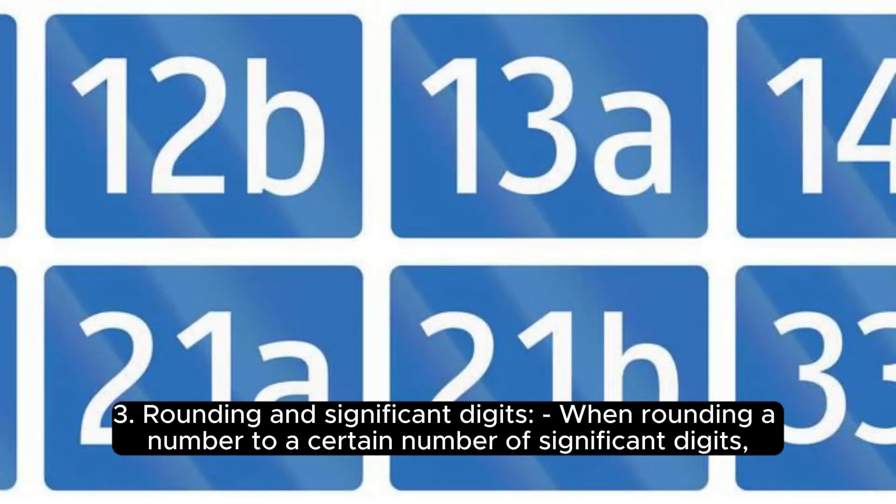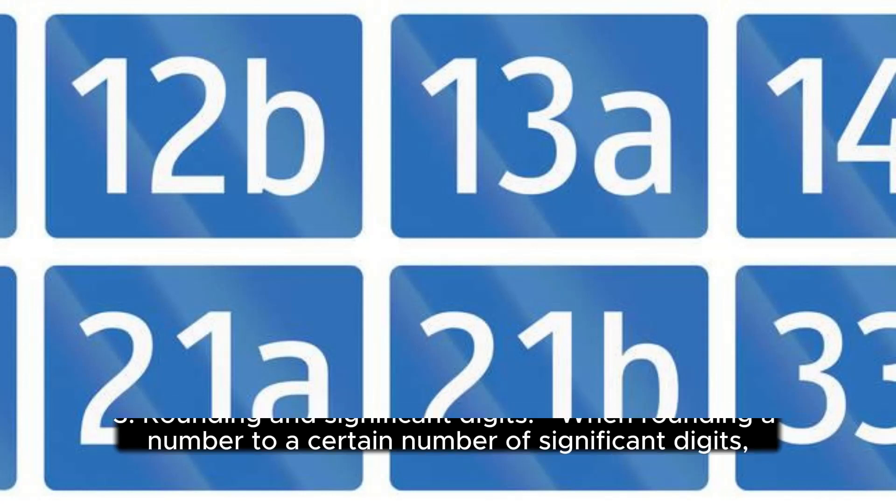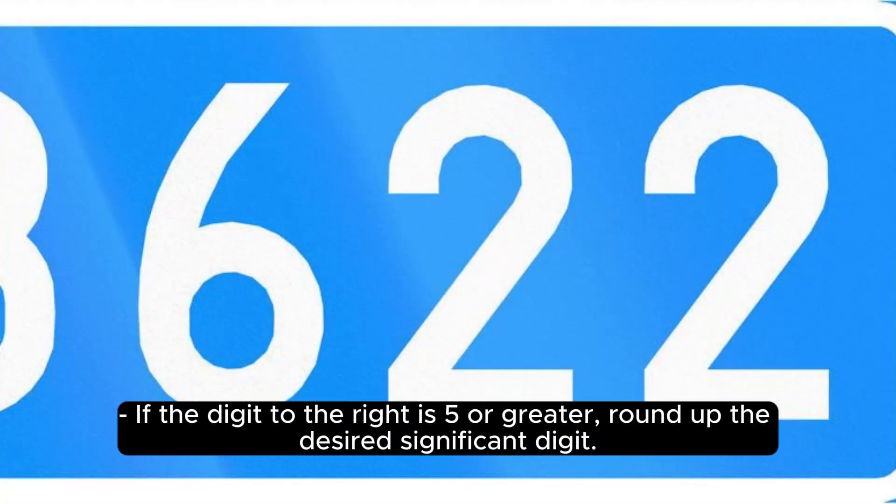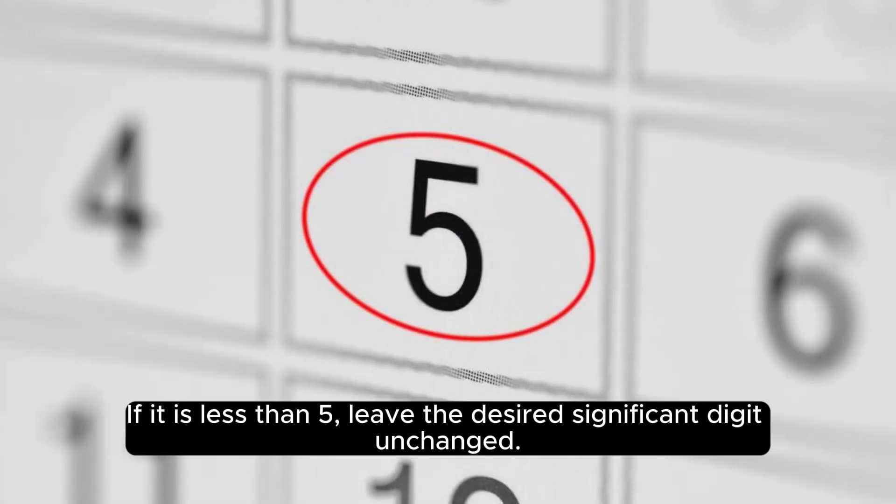3. Rounding and significant digits. When rounding a number to a certain number of significant digits, consider the digit immediately to the right of the desired significant digit. If the digit to the right is 5 or greater, round up the desired significant digit. If it is less than 5, leave the desired significant digit unchanged.